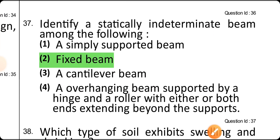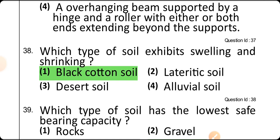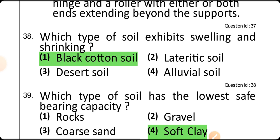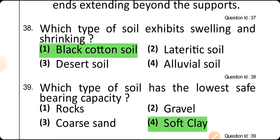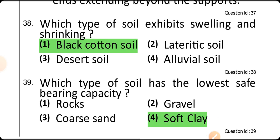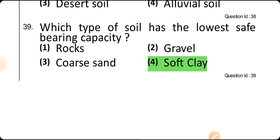Identify the statically indeterminate beam — a fixed beam is statically indeterminate. Which type of soil exhibits swelling and shrinkage? Obviously, black cotton soil. Which type of soil has the lowest bearing capacity? Soft clay or black cotton soil.